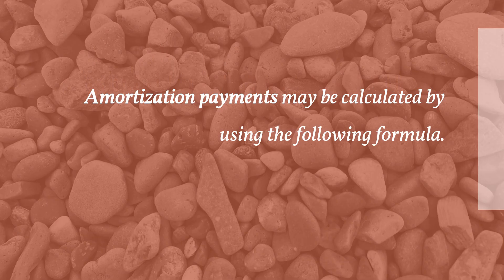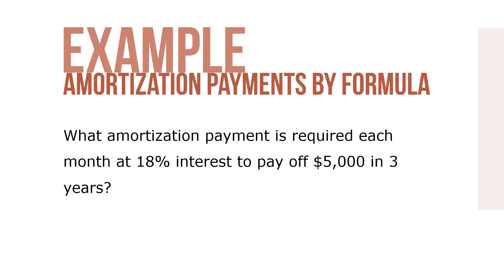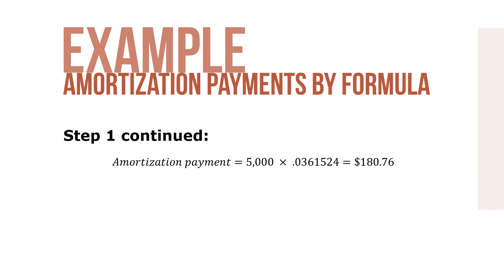Amortization payments may be calculated by using the following formula. In this formula, PV is the amount of the loan or obligation, I is the interest rate per period, and N is the number of periods. Here's an example. What amortization payment is required each month at 18% interest to pay off a $5,000 loan in three years? Our amortization payment is $5,000 times 0.0361524, which equals a total amortization payment of $180.76.